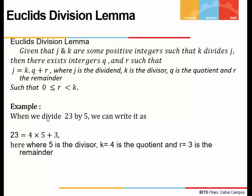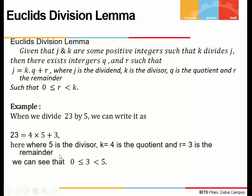For example, dividing 23 by 5: 23 can be written as 4 times 5 plus 3, where 5 is the divisor, 4 is the quotient, and 3 is the remainder. The remainder 3 is less than the divisor 5 and it is positive.